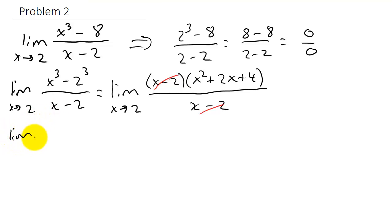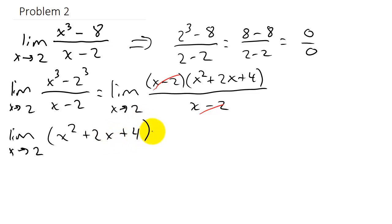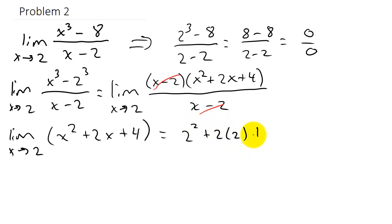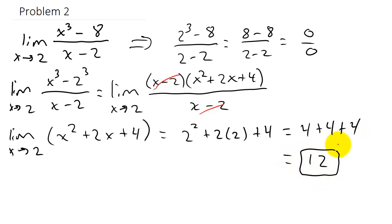That leaves us with the limit as x goes to 2 of x squared plus 2x plus 4, which equals 2 squared plus 2 times 2 plus 4. This gives us 4 plus 4 plus 4, which gives us a limit of 12. I hope this video has helped — thank you.